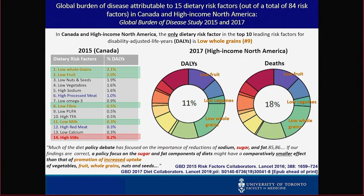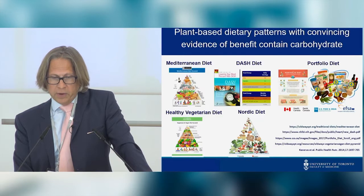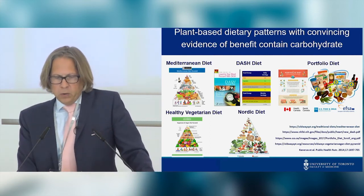The most important carbohydrate-related risk factors are those where low intake is the problem — the only one where high intake is a problem is sugar-sweetened beverages. The conclusion is that focusing on the foods we're not eating is probably more important than just focusing on sugars, fat, and salt. Dietary patterns emphasizing carbohydrate quality foods — Mediterranean, DASH, Portfolio, and others — provide robust evidence for benefit and are well supported by guidelines.